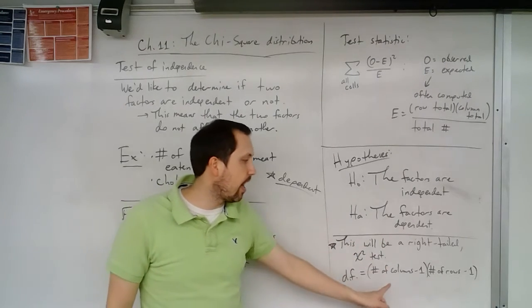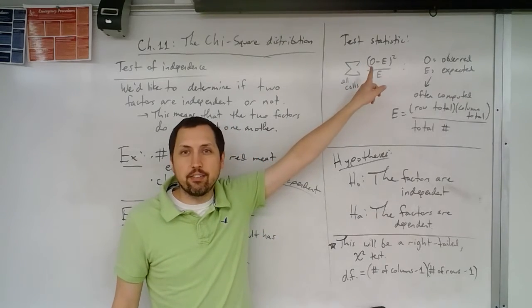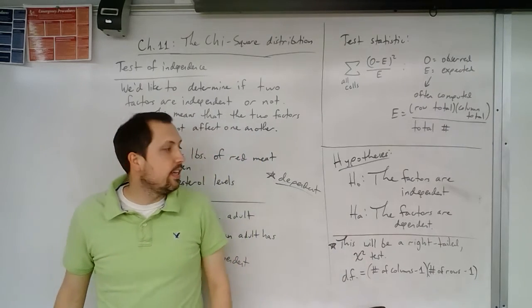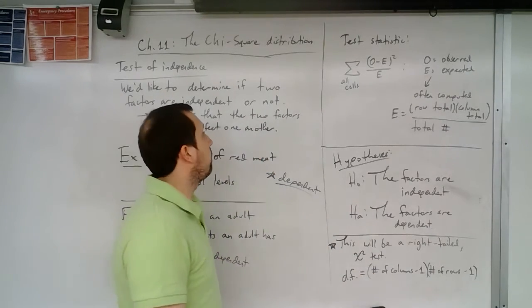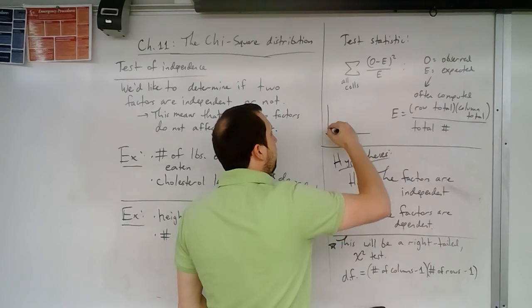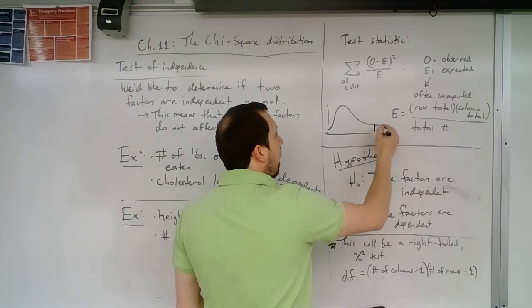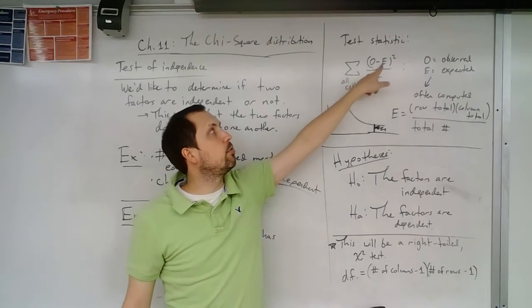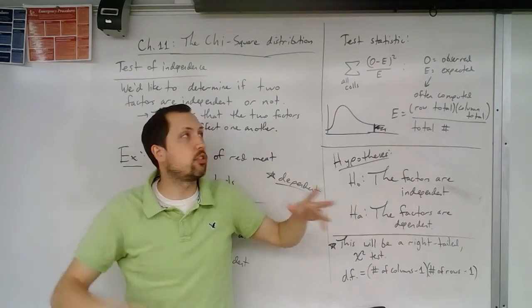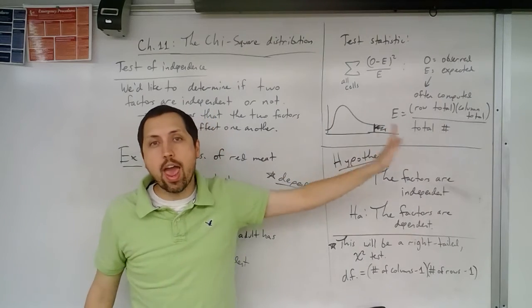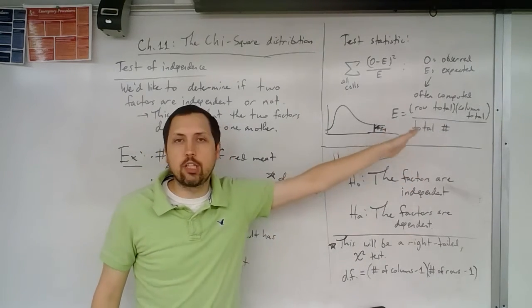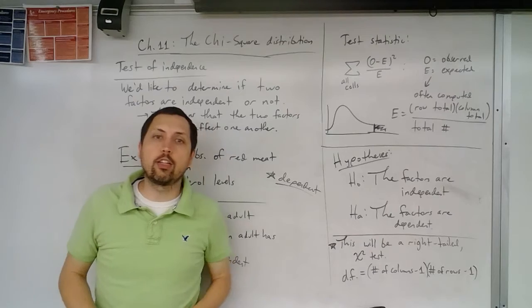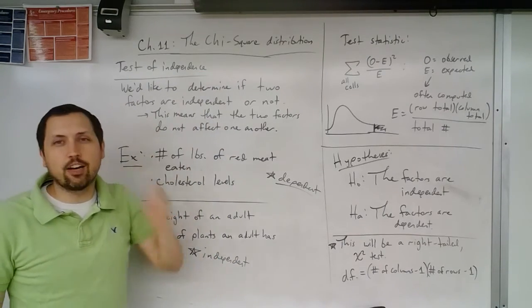And this will always be a right tail chi-square test. This is always going to be something positive, so we're always going to be to the right. The degrees of freedom is the number of columns minus one times the number of rows minus one. So what we're imagining in this situation is if we have our chi-square distribution, if we're way out here, this p-value is going to be small. That's a very large number. That means that the observed minus expected must have been very big. So there's something going on here when this is way out there. So right tail test, we're always going to be finding the p-value out to the right. So this is just hopefully some good information before we look at some examples with the test of independence.